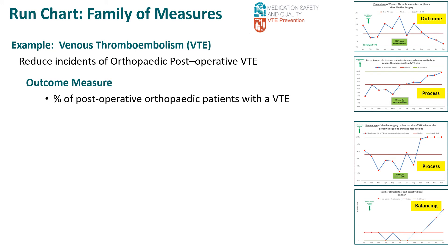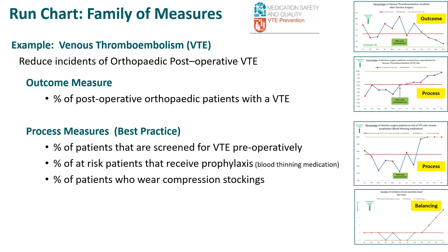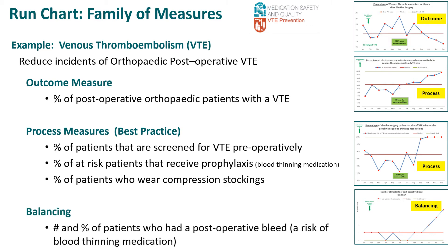The outcome measure looked at the percentage of postoperative orthopaedic patients that had a VTE. The process measures were around best practice, looking at the percentage of patients screened for VTE before their operation, the percentage of at-risk patients that received their prophylaxis — their blood thinning medication — and the percentage of patients who wore compression stockings. The balancing measure was to look at both the number and the percentage of patients who had a postoperative bleed. To the right, we have some run charts looking at some of those measures.